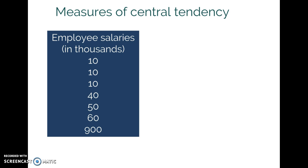and then one very well-paid CEO who earns $900,000 a year. If I were to take the mean by adding up the salaries and dividing by seven, I would get a mean of about $154,000 per year.